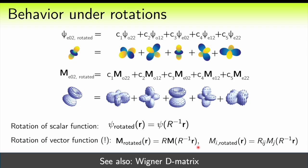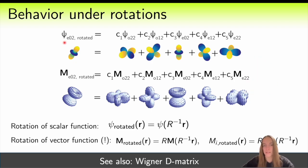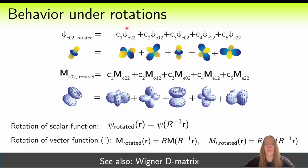Just look at this formula. But what does it mean to behave the same? It turns out that if you take a scalar harmonic, say cE02, and rotate it by an arbitrary angle, the rotated harmonic can be expressed as a linear combination of just five unrotated harmonics — all with n equal to 2. In other words, you don't need the entire basis, just 2n+1 functions.